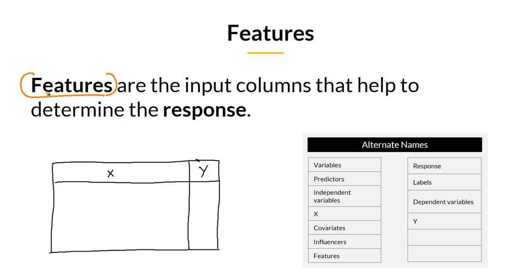Now there are various different terms or alternate words to represent the same meaning. A feature may also be called as variables, predictors, independent variables, x variables, covariates, influencers, finally features.